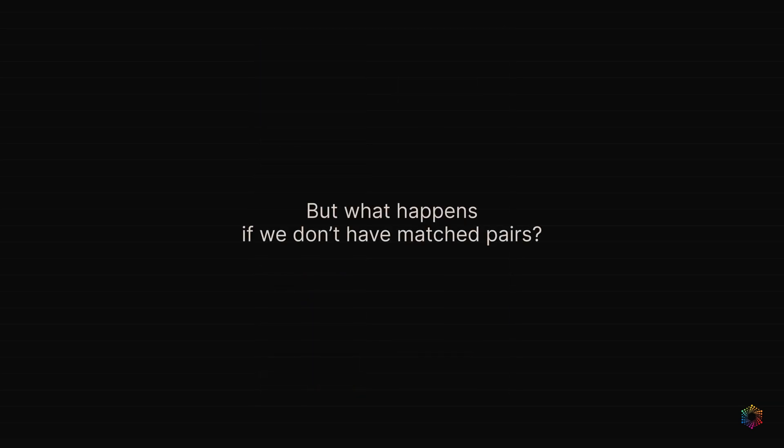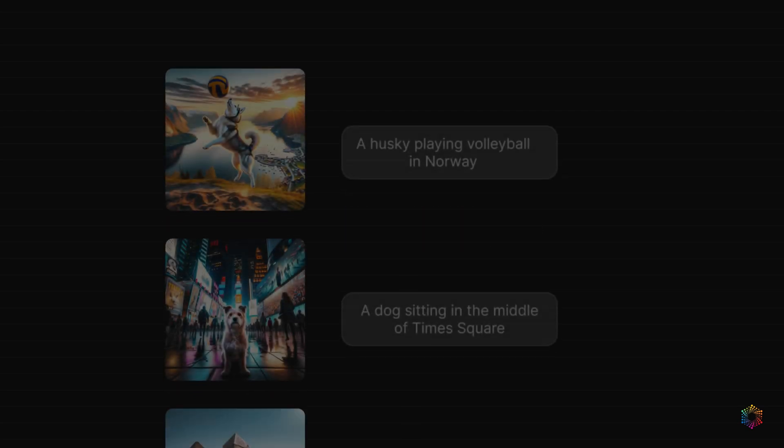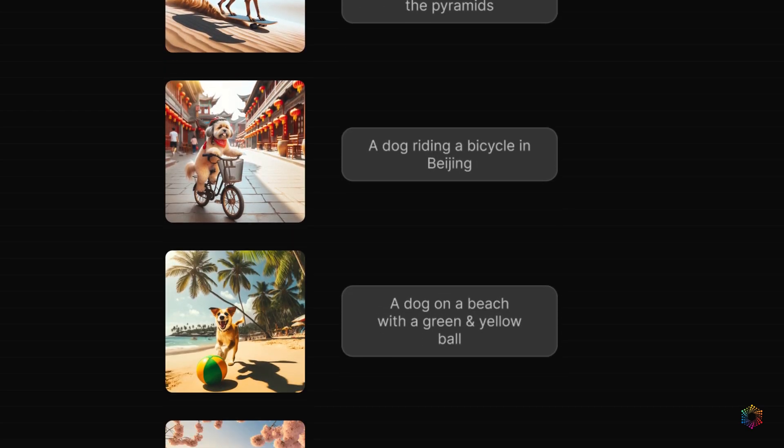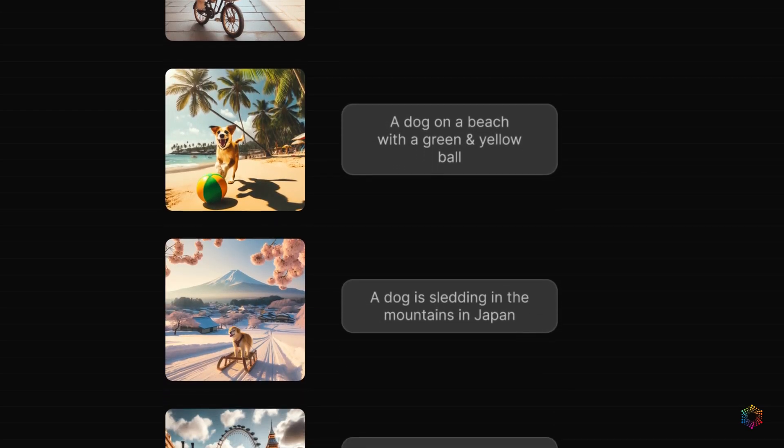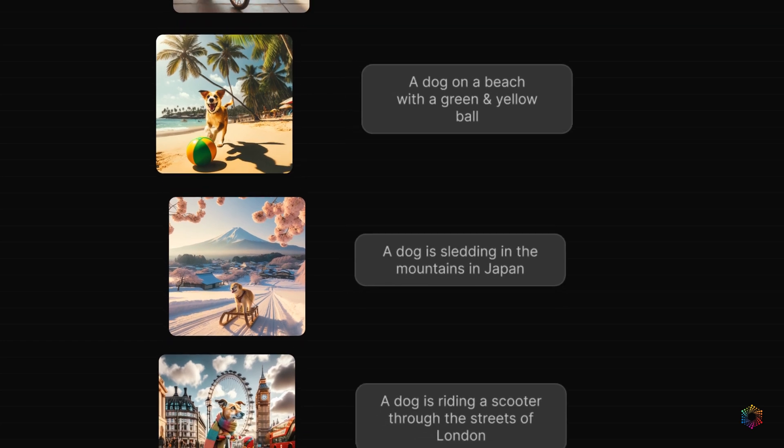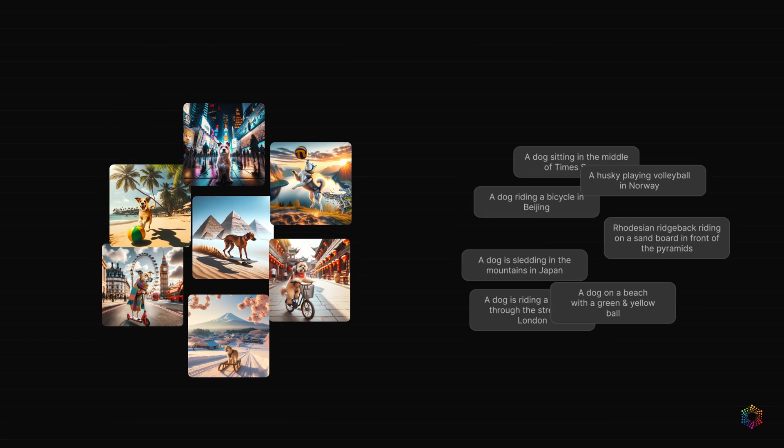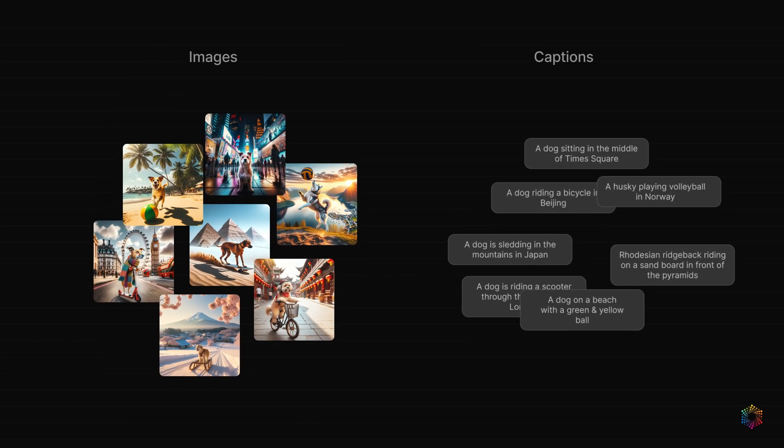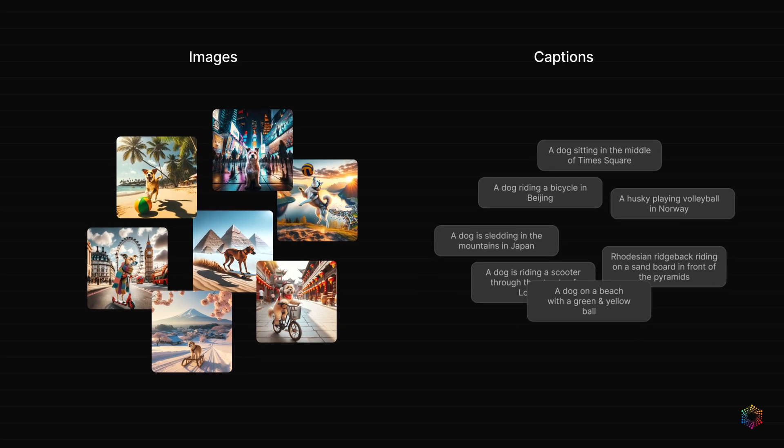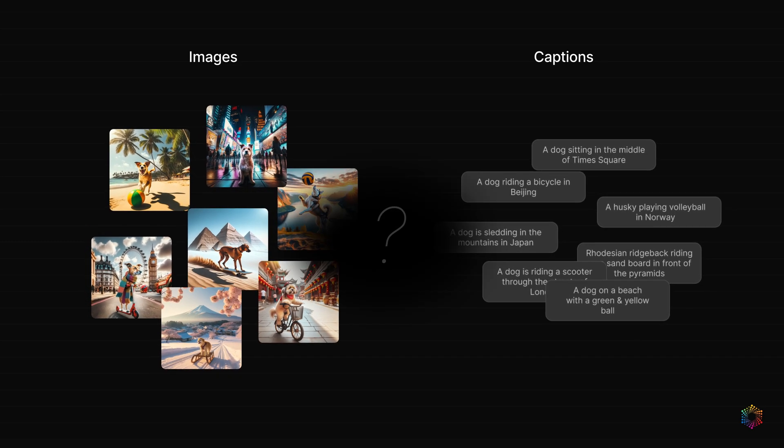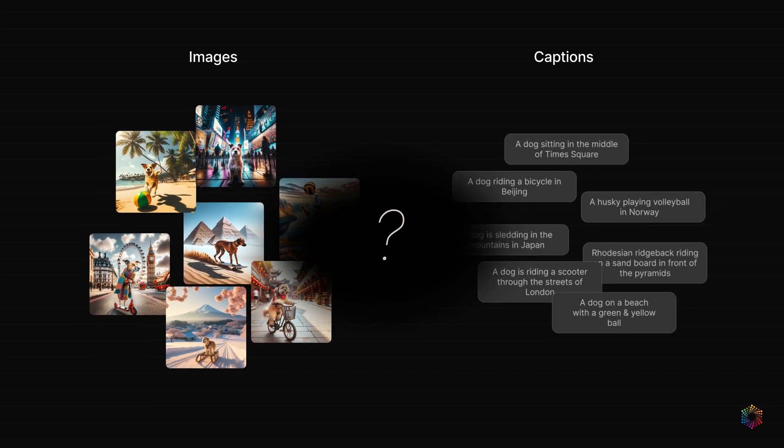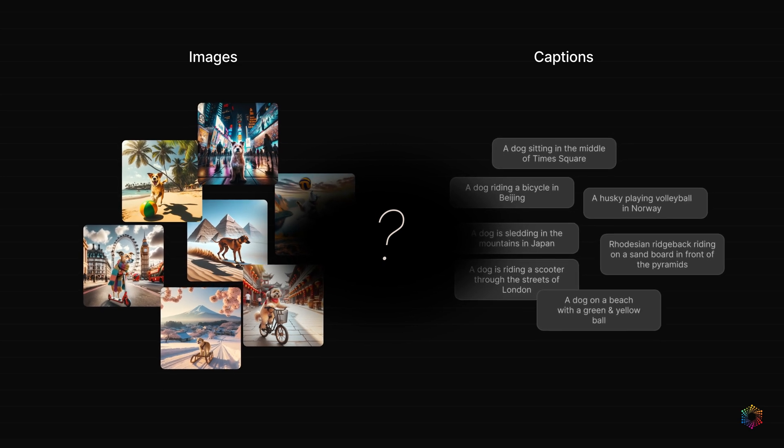But what happens if we don't have matched pairs? Let's run a thought experiment. We're working with images and captions, but this time they aren't matched exactly. Something went wrong, and we ended up saving images and captions separately in folders grouped by class label. Without the ground truth, it's hard to match the images and captions with the detailed granularity we had before.